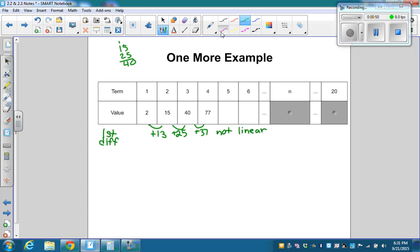So now take the second difference and that's an increase of 12. That's also an increase of 12. So the second difference is constant, so it's quadratic.